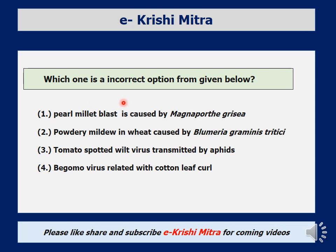Seventh question: which one is the incorrect option from those given? Options are: pulmonary blast is caused by Magnaporthe grisea; powdery mildew in wheat is caused by Blumeria graminis; tomato spotted wilt virus is transmitted by aphids; and begomovirus is related with cotton leaf curl. Magnaporthe is the sexual stage of rice blast, and Blumeria graminis is the correct causal organism of powdery mildew. However, tomato spotted wilt virus is transmitted by thrips, not aphids. So the incorrect option is that the tomato virus is transmitted by aphids.